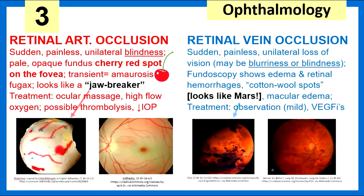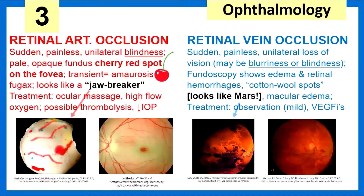As opposed to retinal vein occlusion, which presents similarly with sudden painless unilateral loss of vision. But here, there may not be outright blindness — there may simply be blurriness. Fundoscopy shows hemorrhages that look like Mars, and you may see it described as cotton wool spots or tortuous veins. We treat this with observation if mild, and VEGF inhibitors if severe.